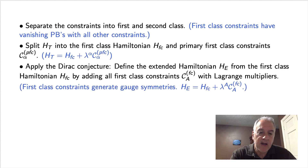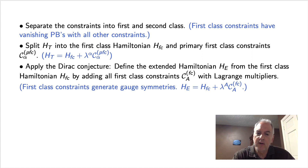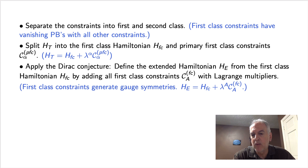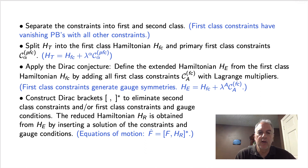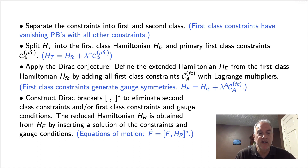Next, we apply the Dirac conjecture, which says that all first class constraints generate gauge symmetries. We can define the extended Hamiltonian from the first class Hamiltonian by adding all of the first class constraints with Lagrange multipliers. Finally, we can replace the Poisson brackets with Dirac brackets and eliminate the second class constraints. If we like, we can also eliminate the first class constraints by imposing gauge conditions. The reduced Hamiltonian is obtained from the extended Hamiltonian by using the constraints and gauge conditions to eliminate some of the variables.